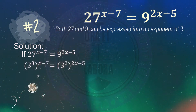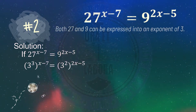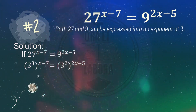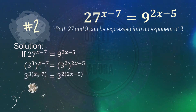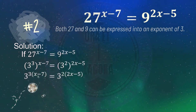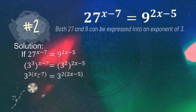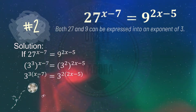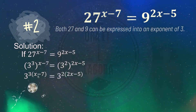We change 27 into its exponential form, which is 3 cubed, and 9, which is 3 squared. Simplifying this, we get 3 raised to 3 times quantity x minus 7 equals 3 raised to 2 times quantity 2x minus 5. Since both now share the same base, we can set the exponents equal.